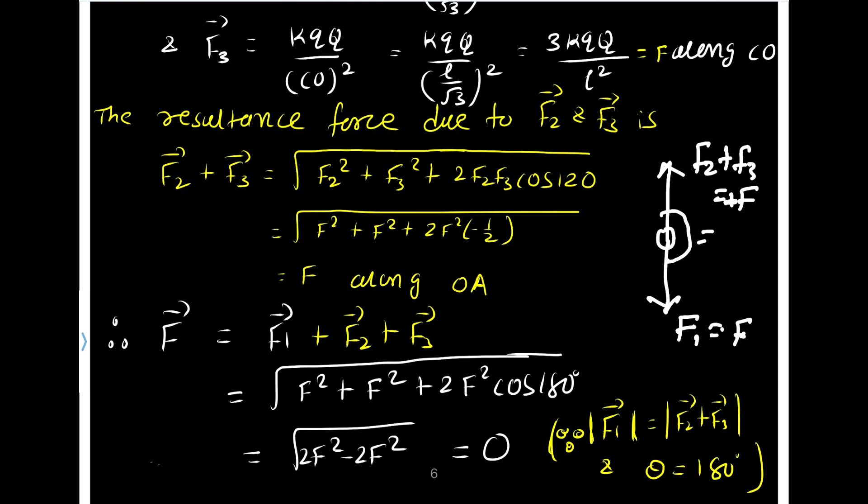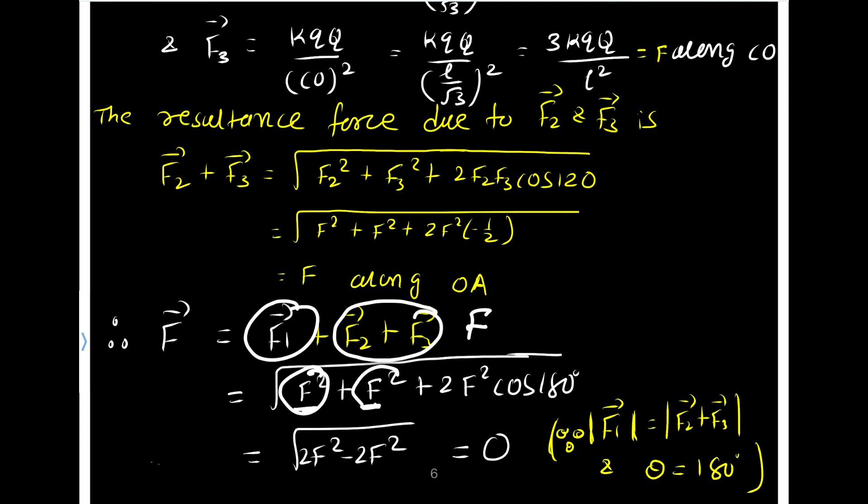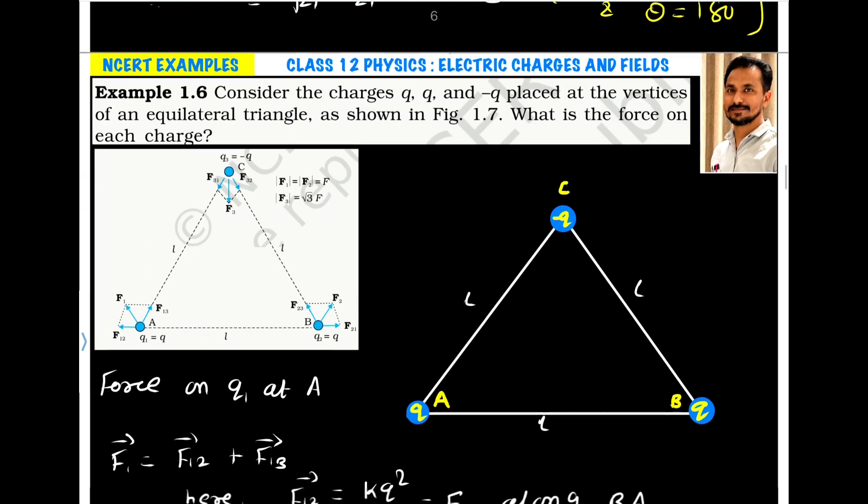So the net force, if this I consider positive, then this is negative. So the resultant is 0. The resultant force is 0, or mathematically F2 plus F2. So here it is F2. The resultant of these two forces is also F. So it is F2 plus 2F into F. So F2 cos 180. So 2F2 minus 2F2 is equals to 0 because cos 180 is minus 1.